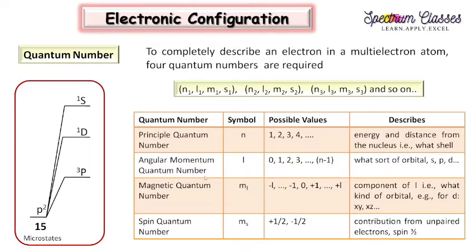n describes the energy and distance from the nucleus - that is, the shell. Second, l is the angular momentum quantum number, also known as the azimuthal quantum number, and it has values 0, 1, 2, 3 up to n minus 1. It describes what sort of orbitals we are having. Third, the magnetic quantum number m has values minus l to plus l differing by 1. It decides the component of l - that is, what kind of orbital, for example dxy, dyz, etc., the electron occupies. Next is the spin quantum number, which describes the contribution from unpaired electrons. These quantum numbers describe where the electron is present in a multi-electron atom.